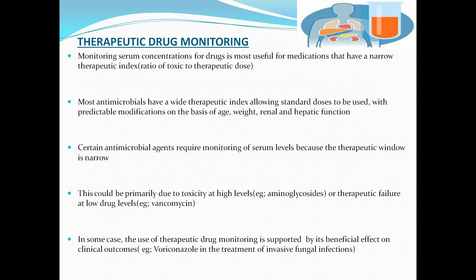Coming to therapeutic drug monitoring — monitoring serum concentrations is most useful for medications with a narrow therapeutic index (i.e., a narrow ratio of toxic to therapeutic dose). Most antimicrobials have a wide therapeutic index allowing standard doses to be used with predictable modifications based on age, weight, and renal and hepatic function. Certain antimicrobial agents require monitoring of serum levels because the therapeutic window is narrow — primarily due to toxicity at high levels (e.g., aminoglycosides) or therapeutic failure at low drug levels (e.g., vancomycin). In some cases, therapeutic drug monitoring is supported by its beneficial effect on clinical outcomes, e.g., voriconazole in treatment of invasive fungal infections.